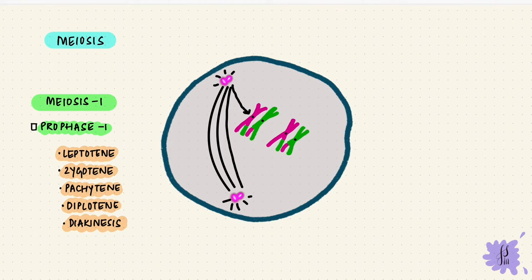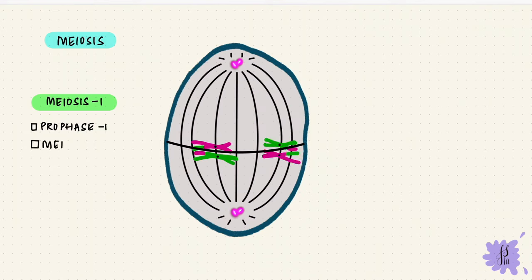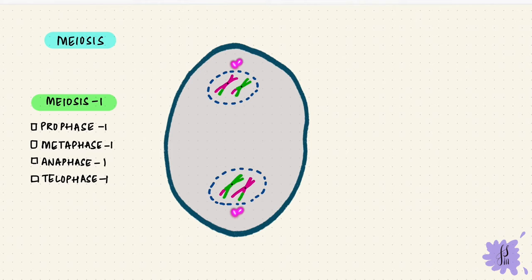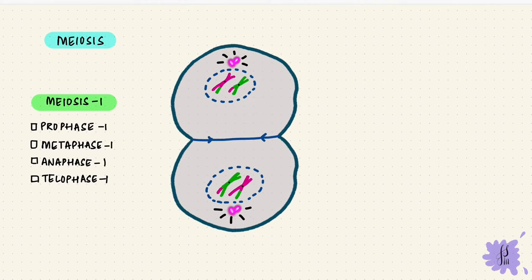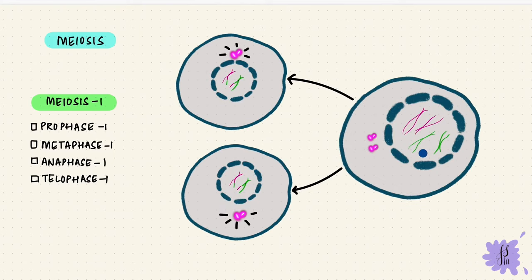Prophase one is now complete — there was chromatid condensation and crossing over. These chromatids line up along the equatorial plate in metaphase one. During anaphase one, unlike mitosis, there is no split at the centromere — instead, one set of chromatids moves randomly to either pole. During telophase one, they reach the poles, spindles disappear, the nuclear membrane returns, and cytokinesis divides the cytoplasm. We now have two cells with half the number of chromosomes as the parent cell. The first meiotic division is therefore a reduction division.